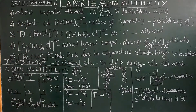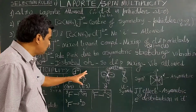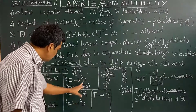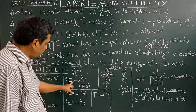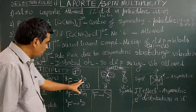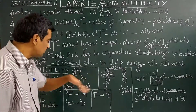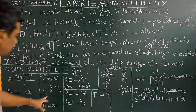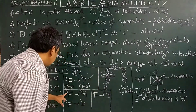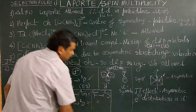For example, in the d² case, the ground state is ³F and the excited state is ³T₂. The transition ³F to ³T₂ is spin allowed because there is conservation of spin multiplicity — triplet to triplet is allowed. A transition from triplet to singlet is spin forbidden.